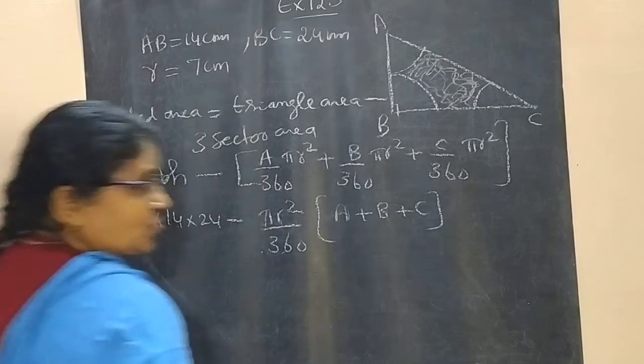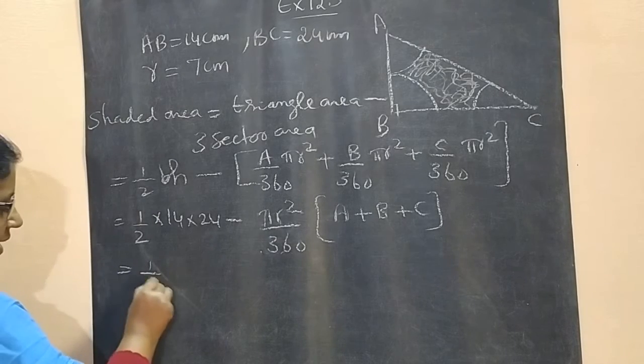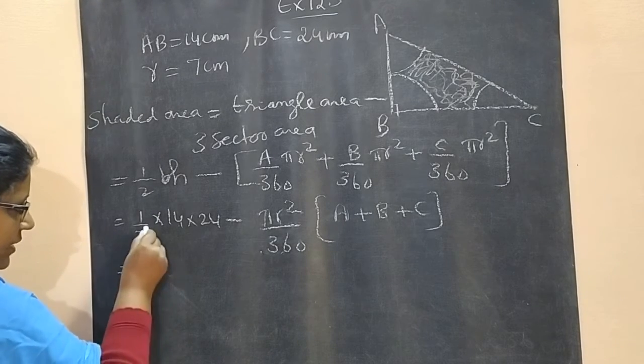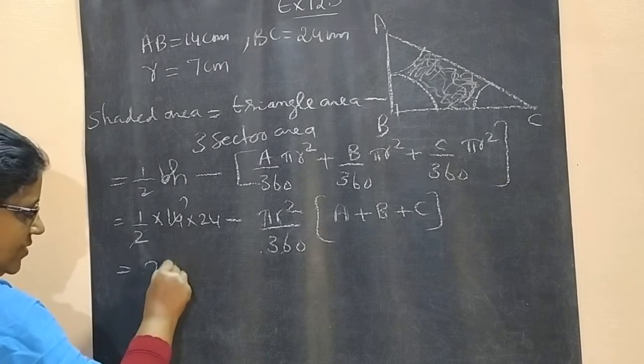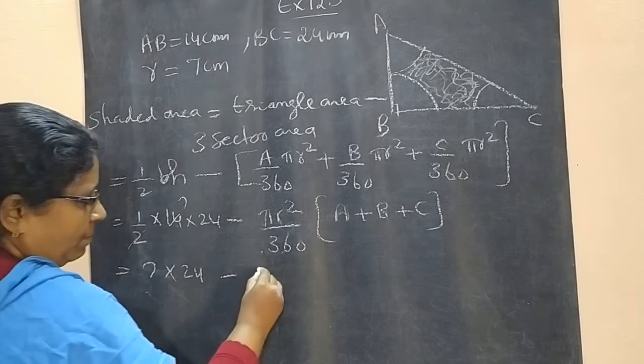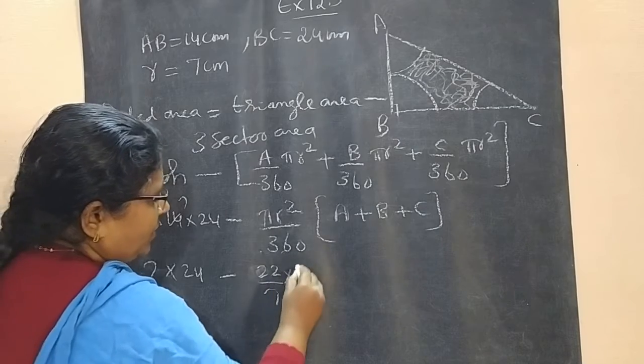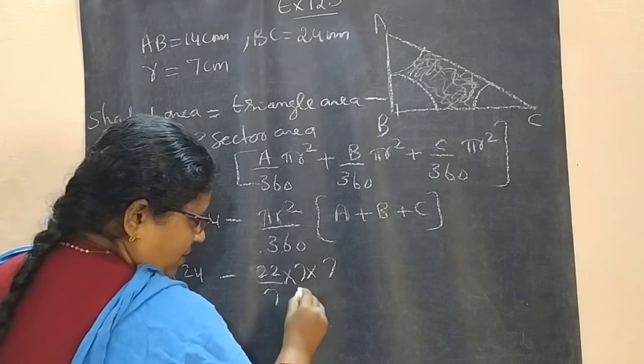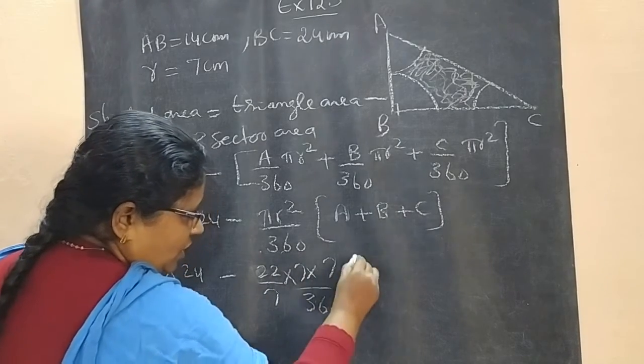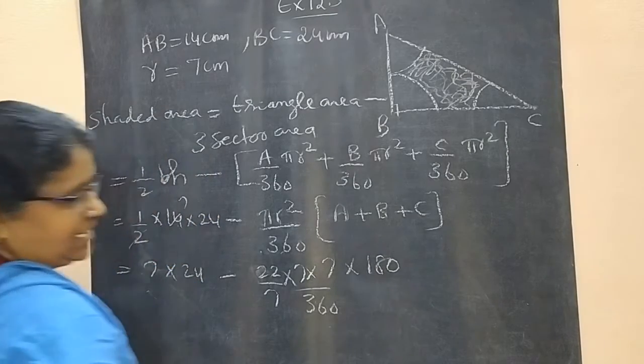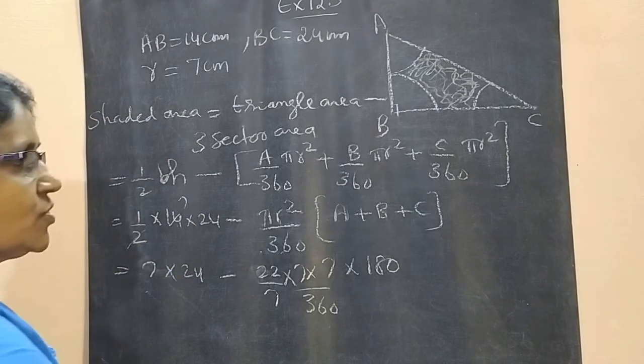A plus B plus C is 180. So, we can write half, or 7. We will get 7 into 24 minus pi means 22 by 7. R is 7 into 7 by 360 into 180.